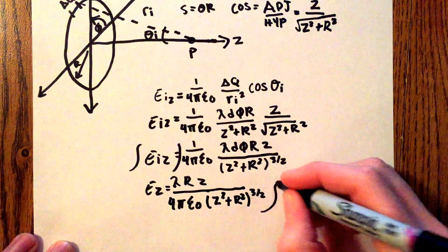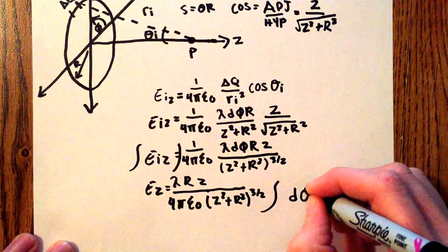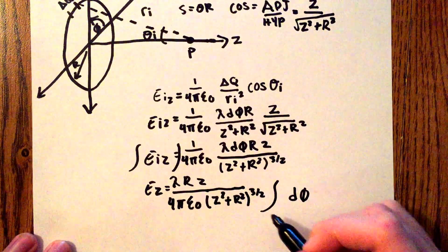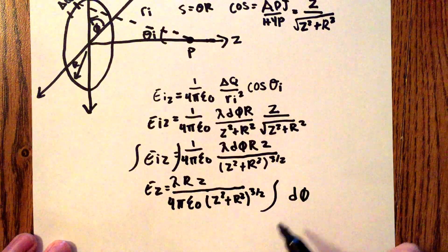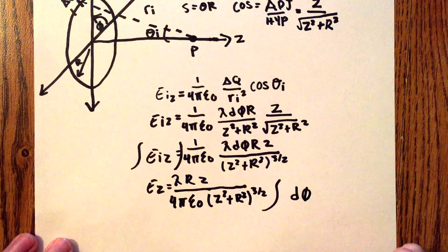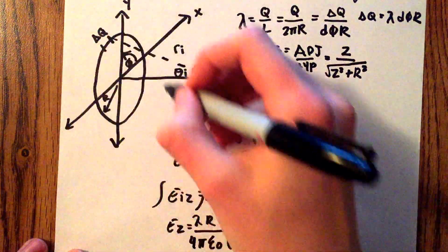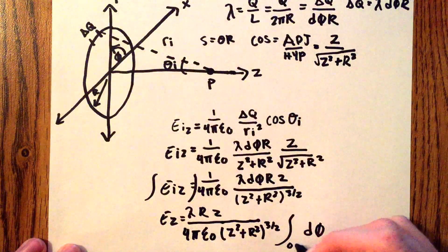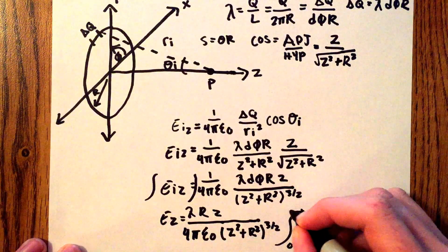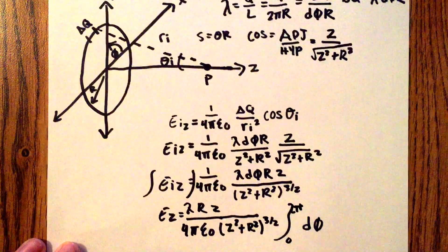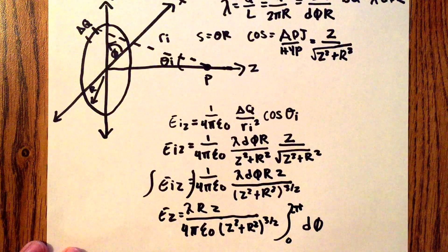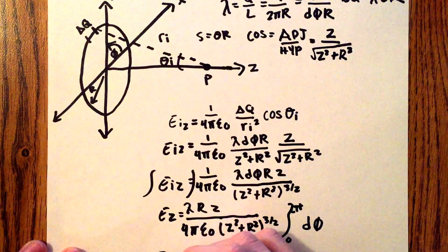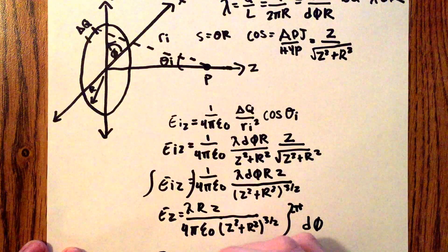We're going to have the integral of just d_phi, as that's the only thing that's changing. The bounds on that integration — since phi is going all the way around the circle — will be from 0 to 2 pi.